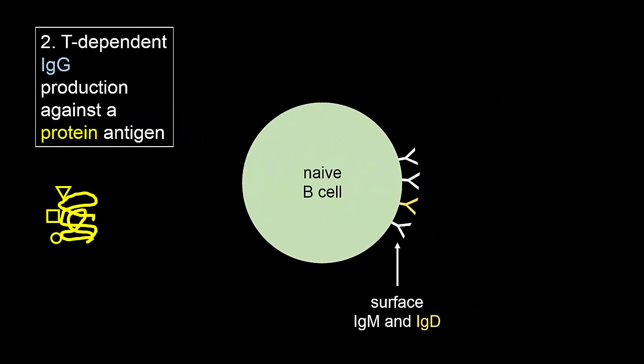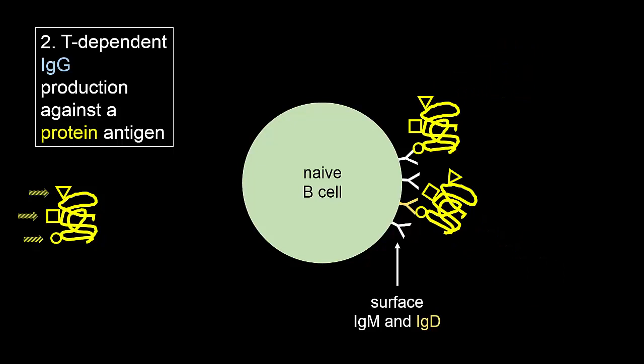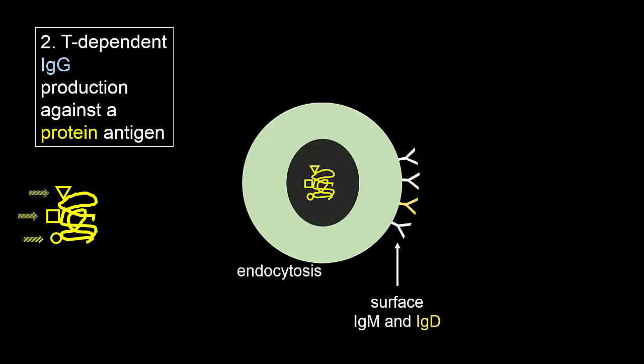Unlike carbohydrates, proteins typically have multiple different antigenic determinants — this one has three shown. The B cell has many antigen receptors, and in this case each one binds the same epitope on a different antigen molecule. There is no strong clustering as there was with carbohydrates.